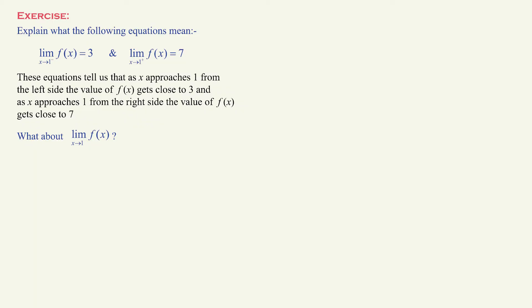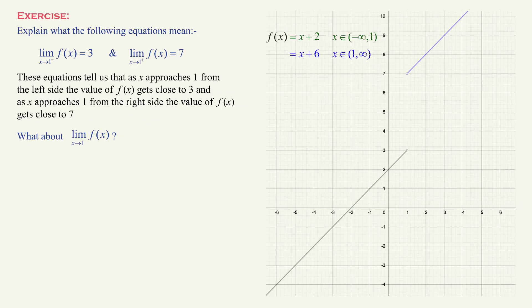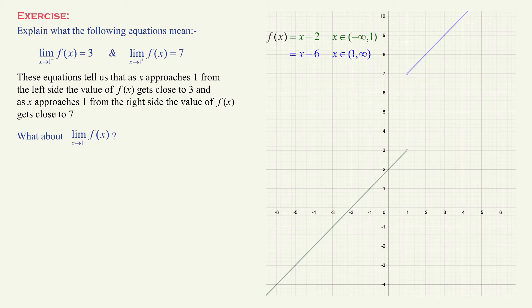And the limit of f of x as x approaches 1 from the right side is 7. Let's consider this function as an example. The graph looks like so — as x gets close to 1 from the left side, the value of y gets close to 3, and as x gets close to 1 from the right side, the value of y gets close to 7. This is just an example I created; it is possible to create an infinite number of functions that satisfy this requirement.